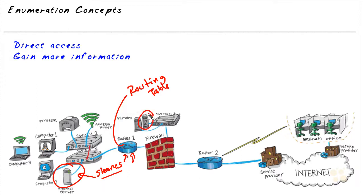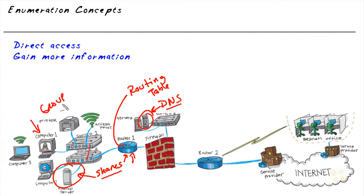We may have DNS servers — domain name system servers — that have the mappings for names to IP addresses, which would be a very valuable jackpot of information to collect. Especially an internal DNS server, which gives us IP addresses associated with multiple internal devices. We can also get computer names, group information, and members of groups. Along with port scanning and fingerprinting, we can identify what applications and services are running on those systems as well.